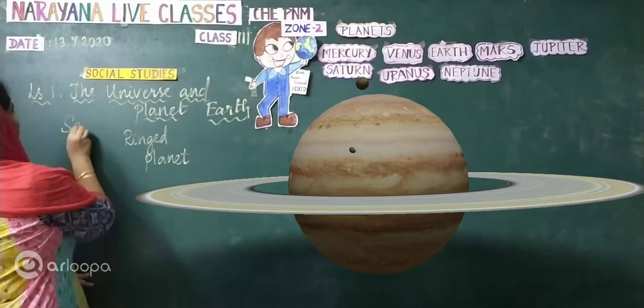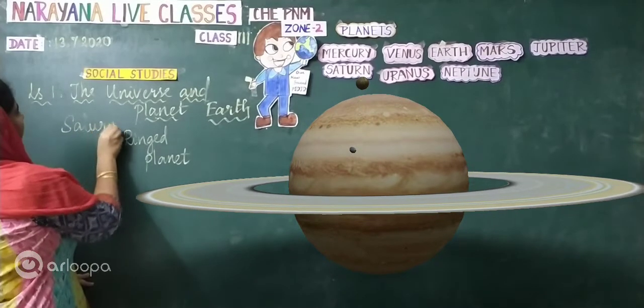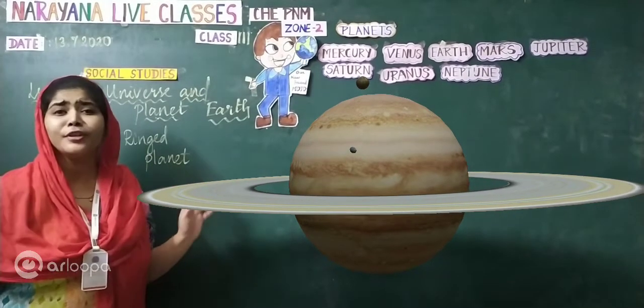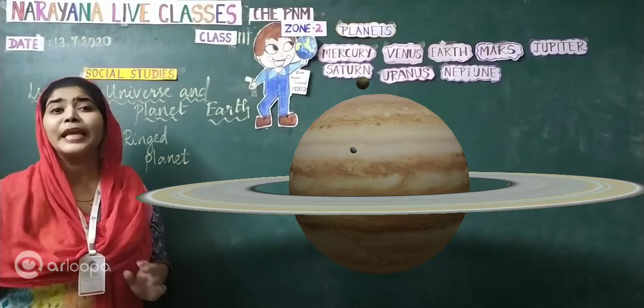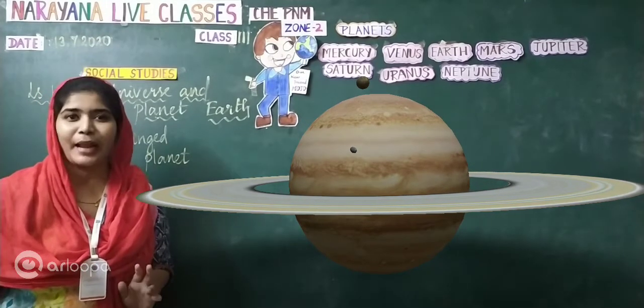Saturn is a ringed planet. And it has got beautiful rings surrounding it. It makes the planet loveliest planet, children.